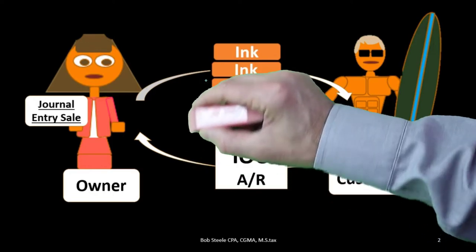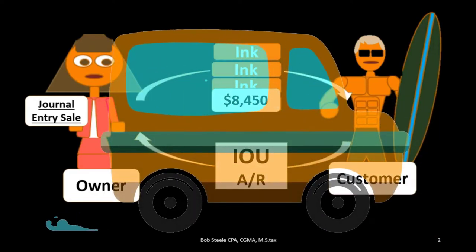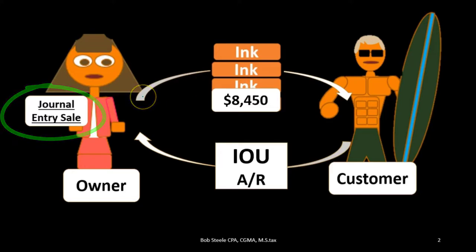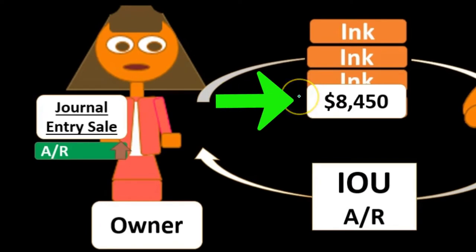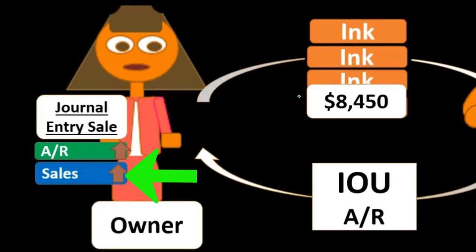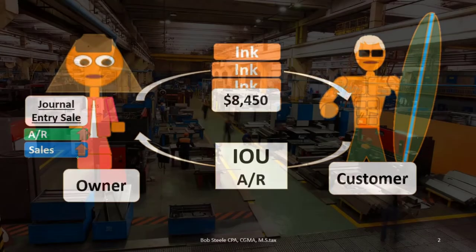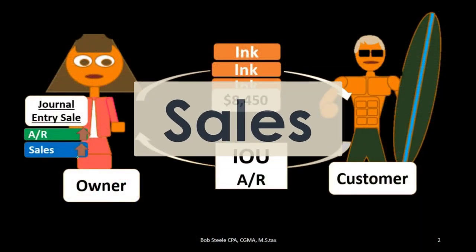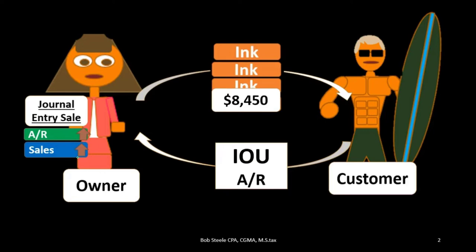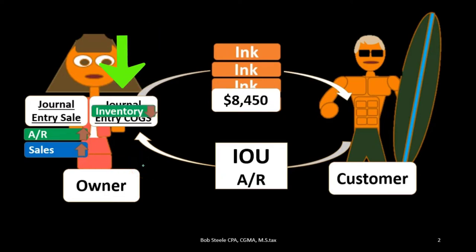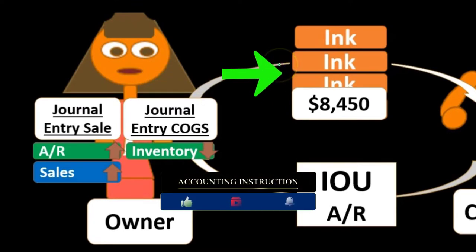The second component — which we can think of as a separate journal entry — is the reduction in inventory and the related cost of goods sold, recording the expense related to the ink we gave away. We can think of the first journal entry as if we were solely a service company, and the second journal entry as the inventory component. If we removed the inventory accounts, accounts receivable would go up by $8,450 and sales or revenue would go up.